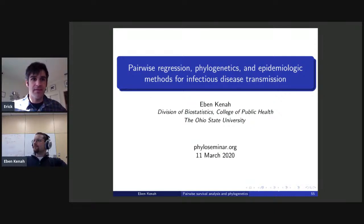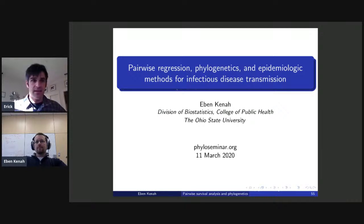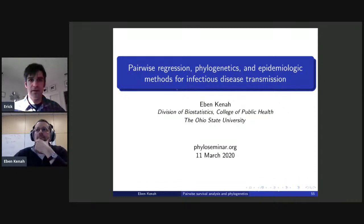Today's speaker is Eben Kana, whose expertise includes survival analysis, epidemiologic methods, phylogenetics, and causal inference. He did his doctorate in epidemiology with a master's in biostatistics at the Harvard School of Public Health working with Mark Lipsitch, followed by a postdoc at the University of Washington, a faculty position at the University of Florida, and then moved to Ohio State University where he is now associate professor.